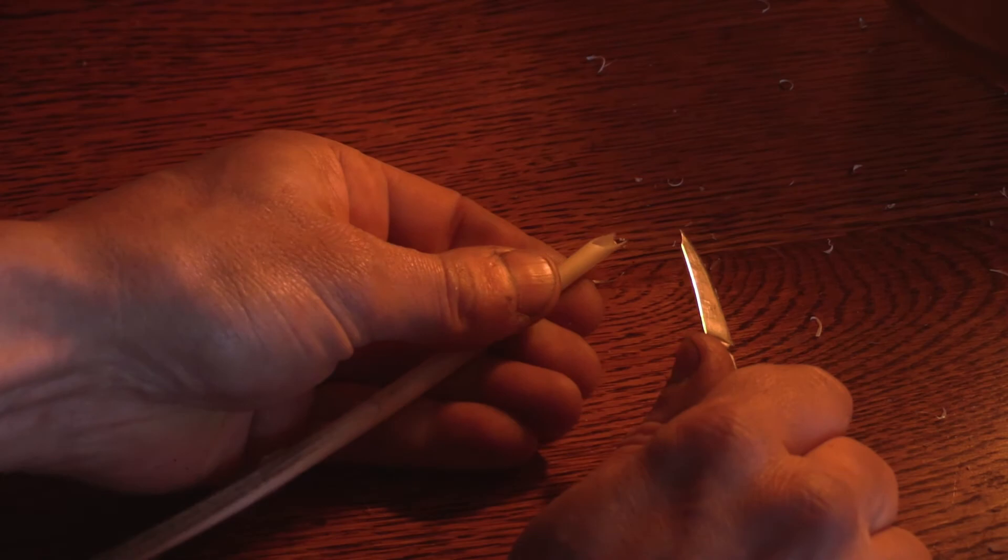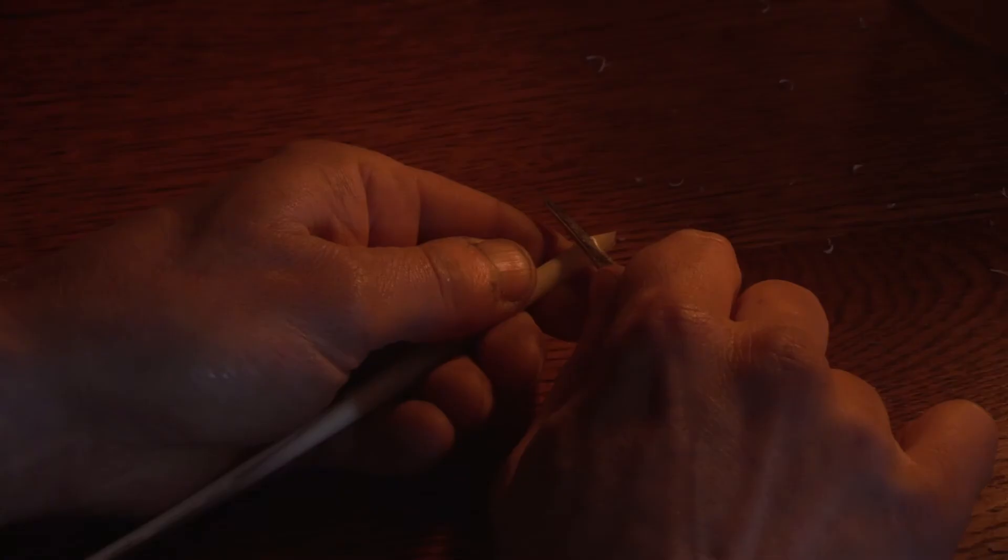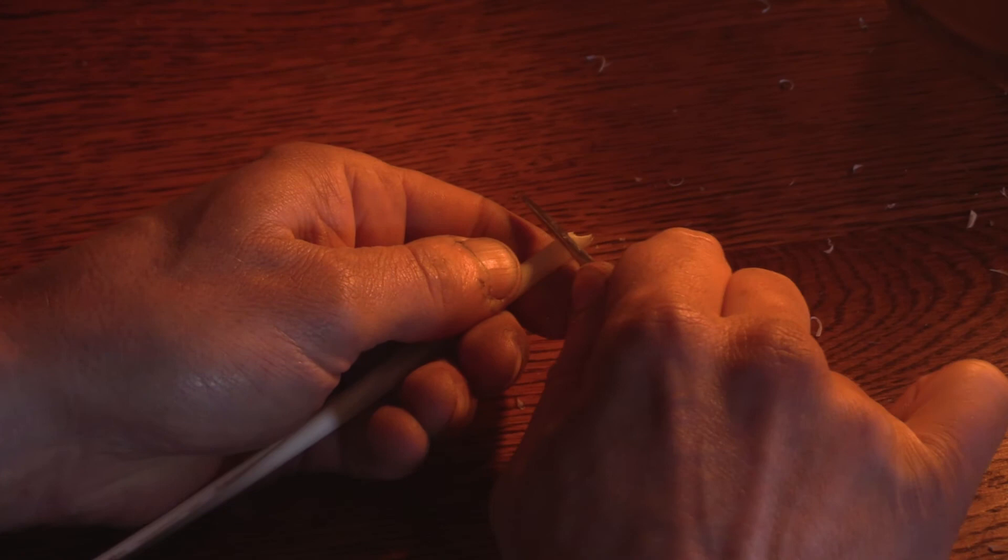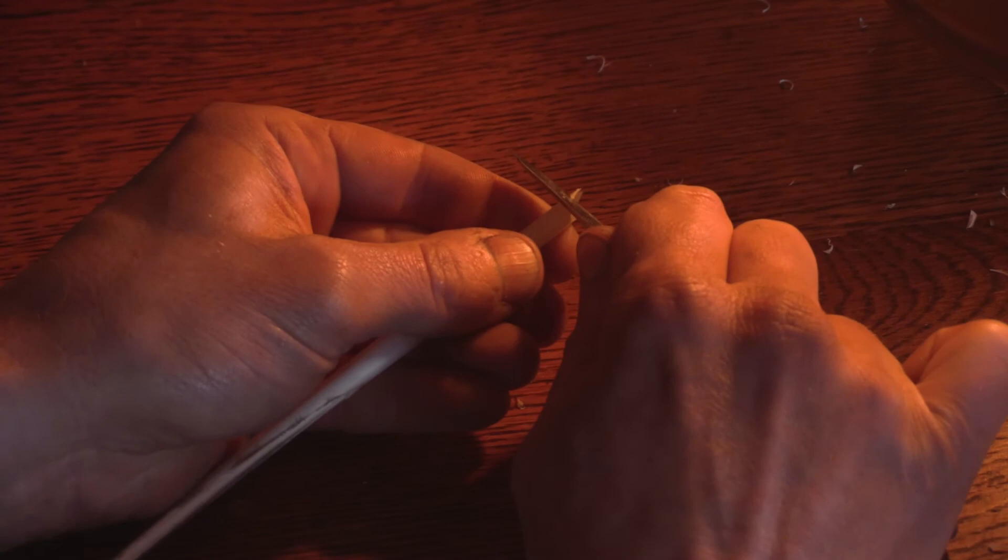Now we cut away the back of the nib. This clears the page when we're writing. And then the sides of the quill to make a point. The longer the point, the more flexible the nib will be. So try to make each side perfectly even.